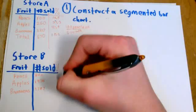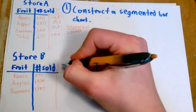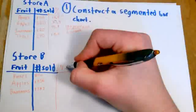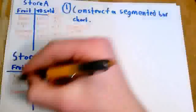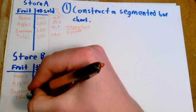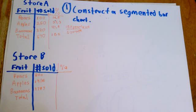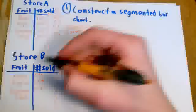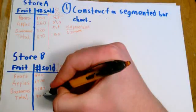All right, Store B, same idea. Let's get percents of each fruit sold. So we'll first find the total, add up all three numbers of fruit sold. You get 4,043.